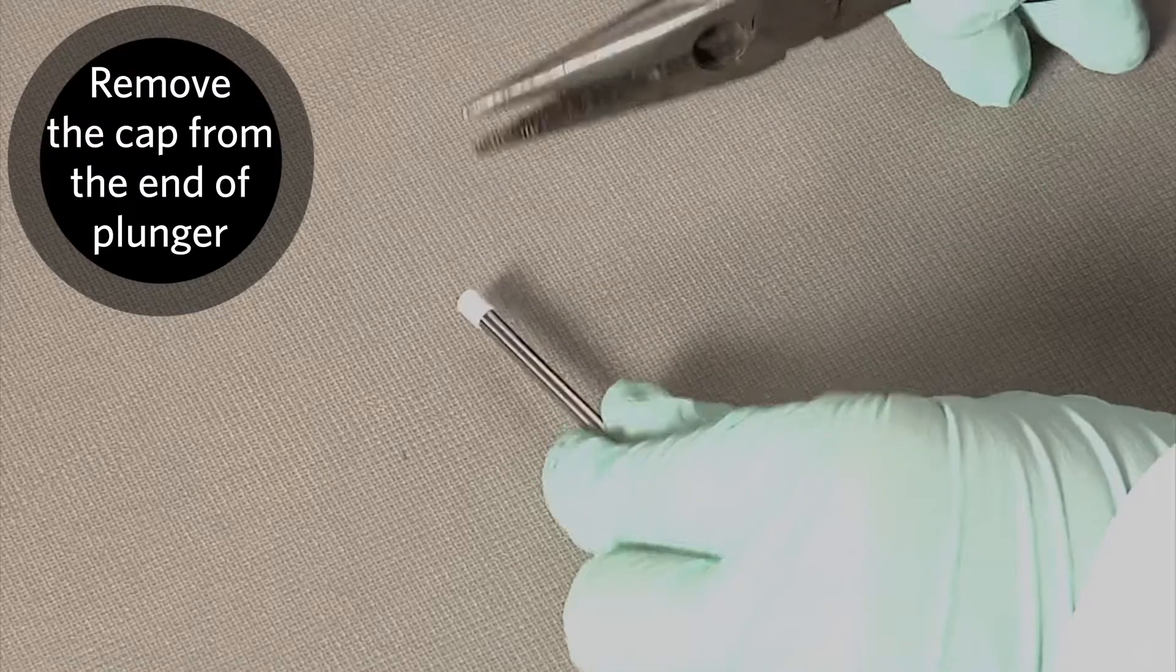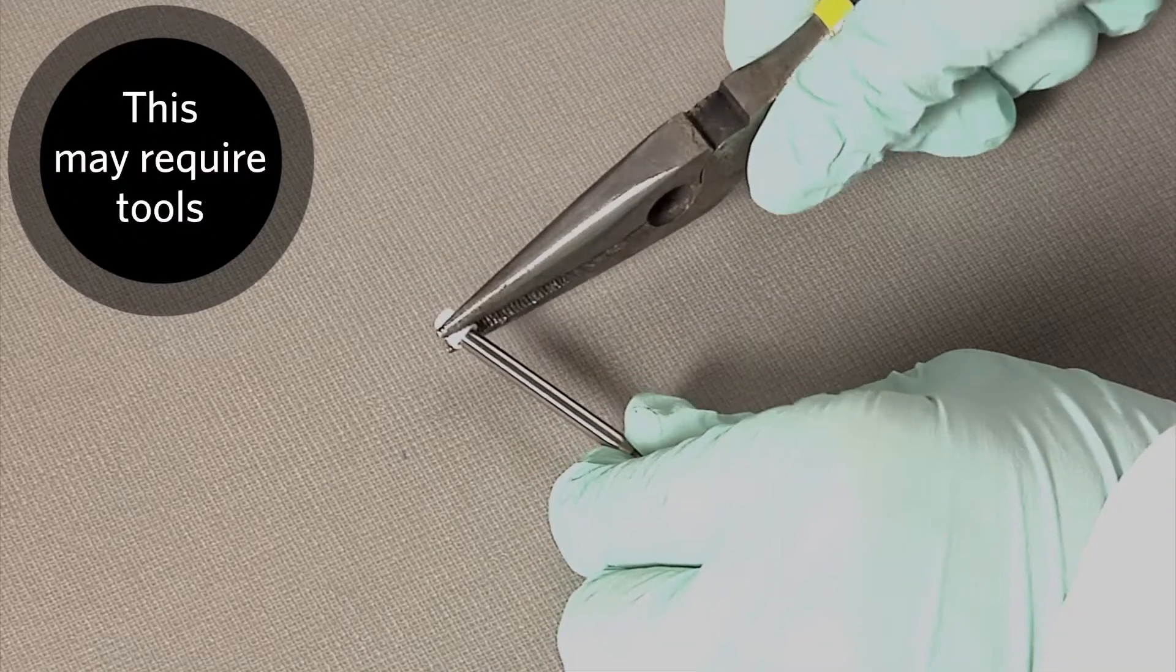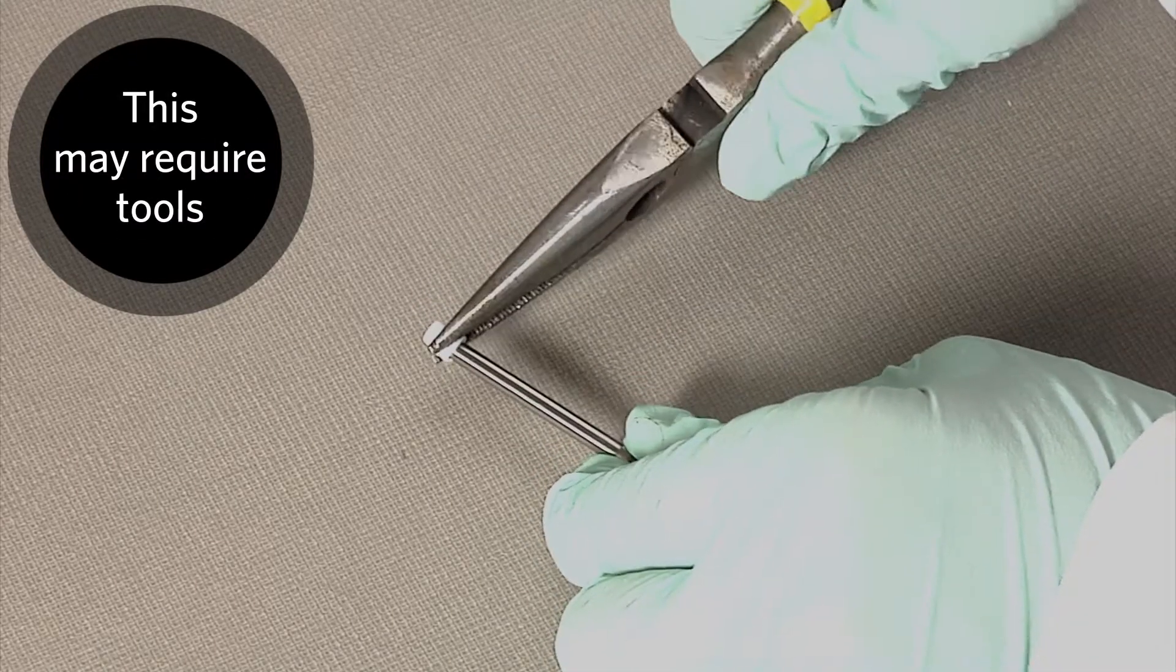Remove the cap from the end of the plunger. Note, tools may be required to remove the seal if it cannot be done by hand.